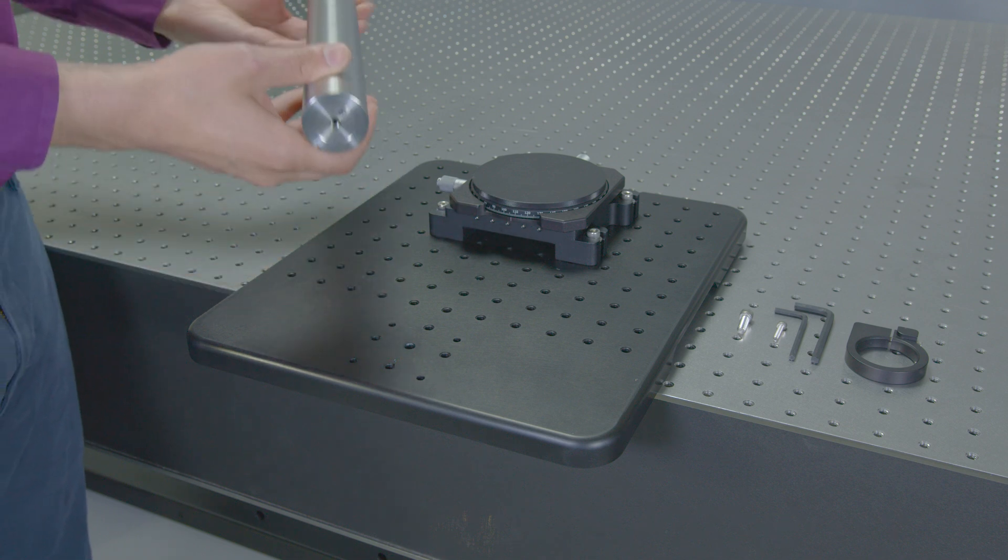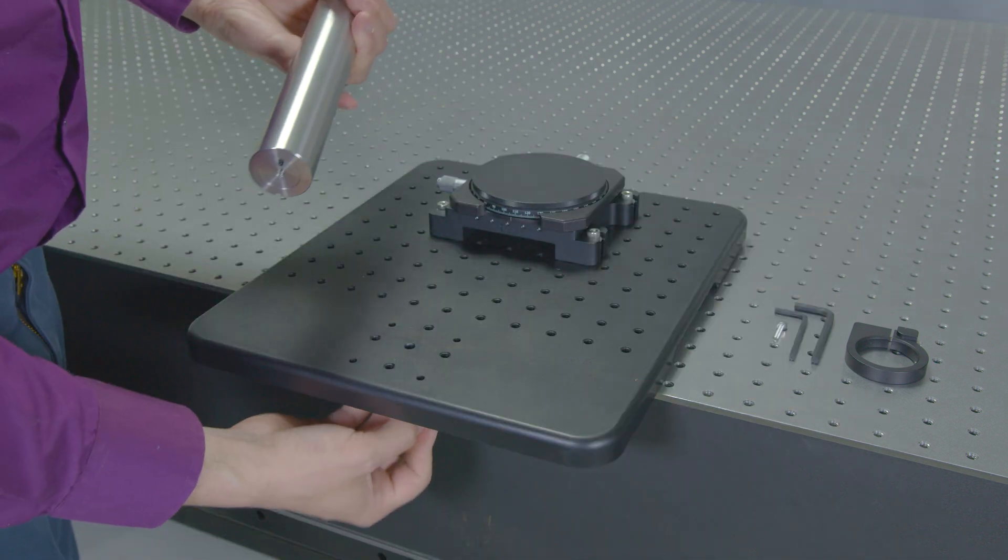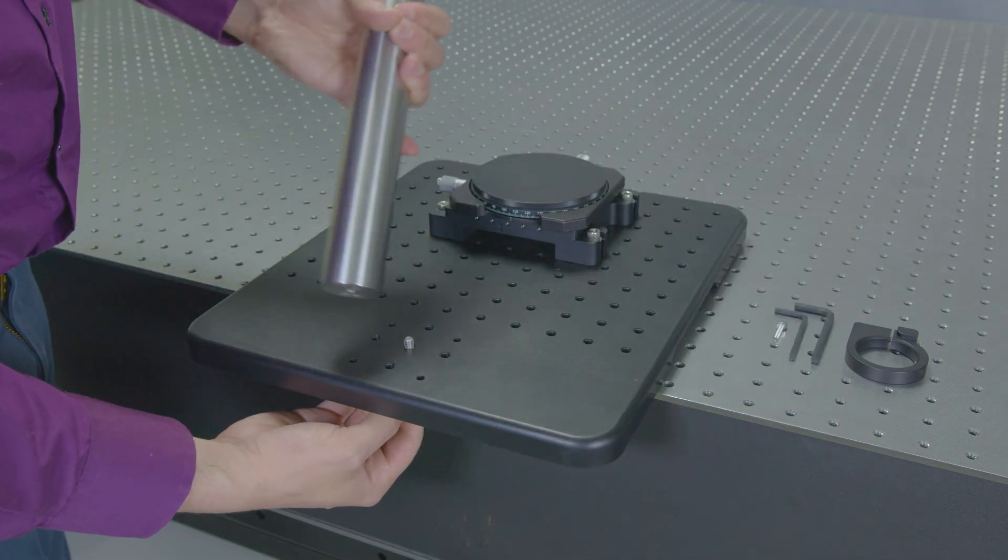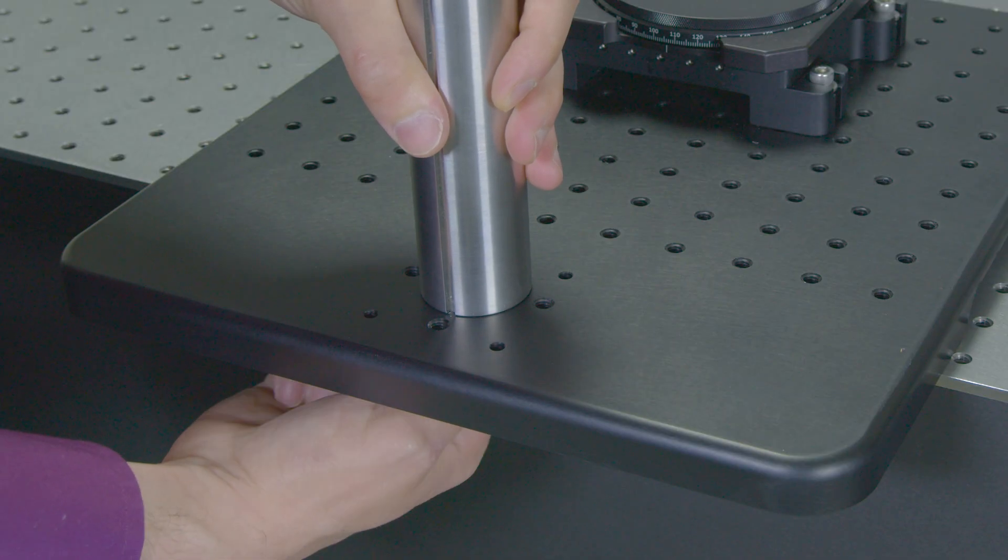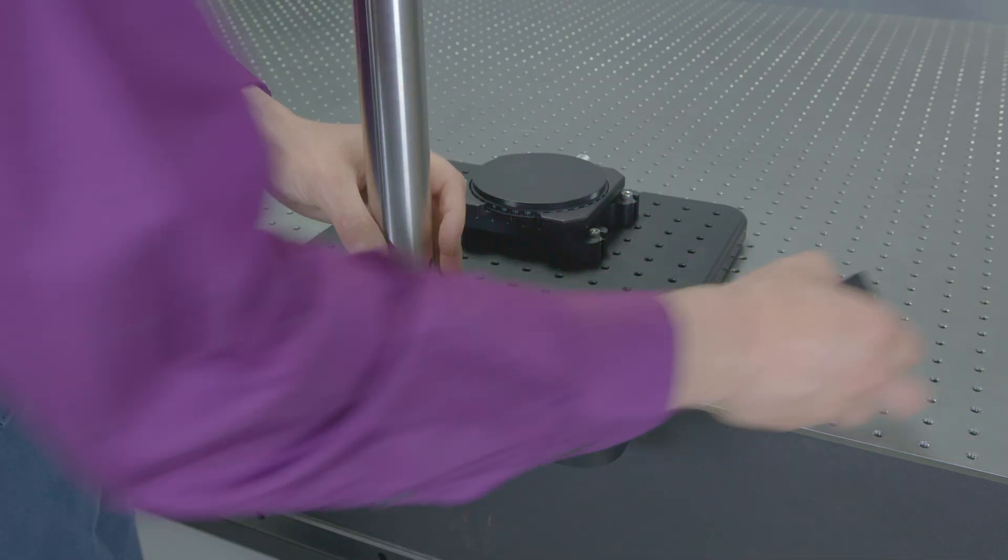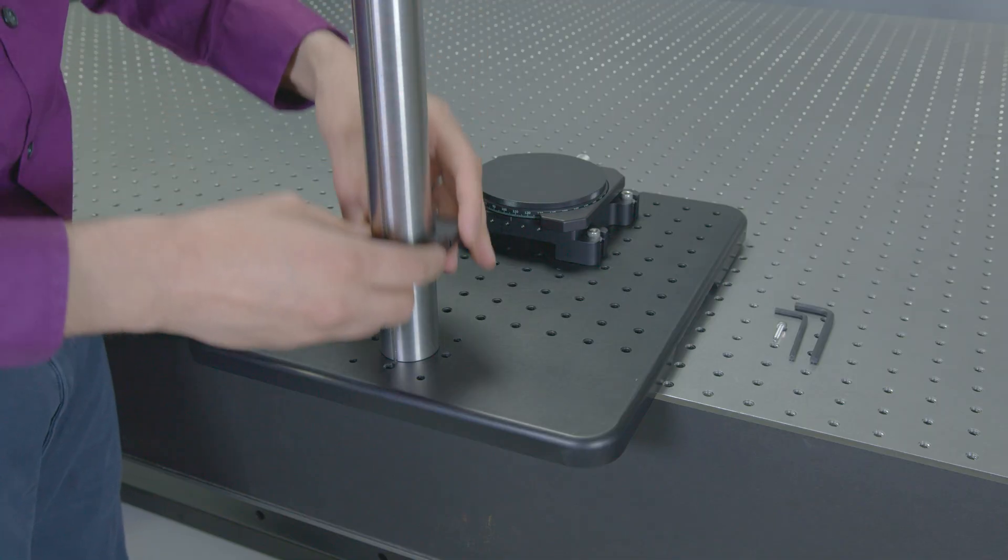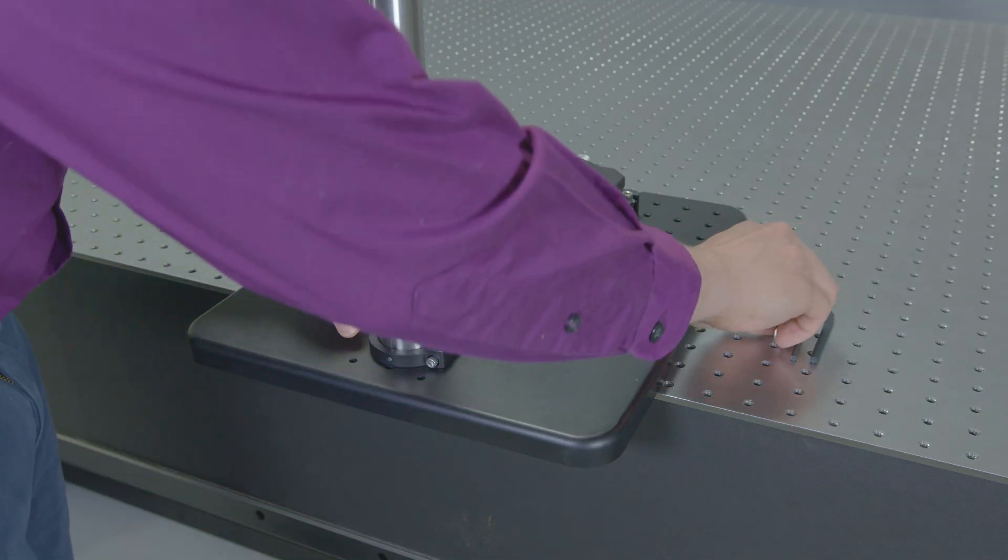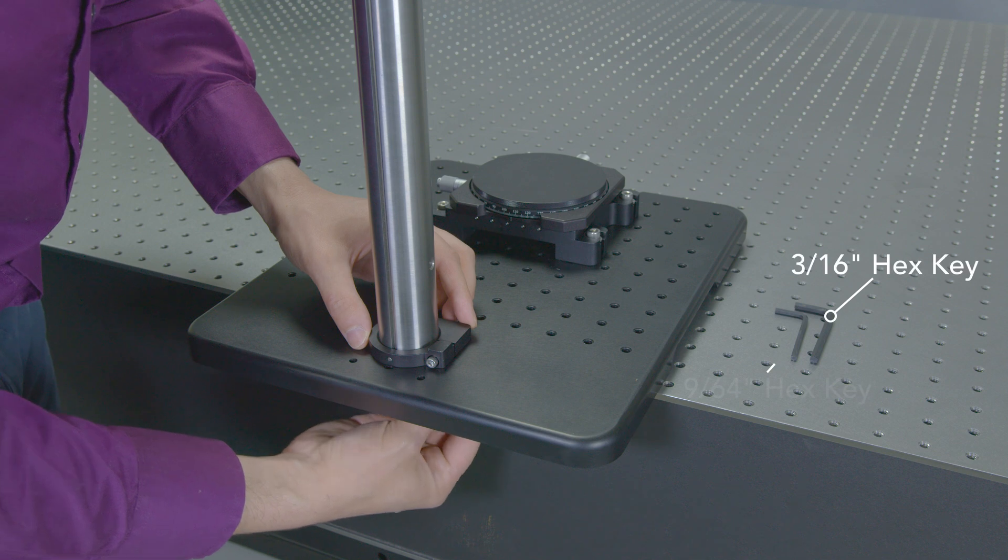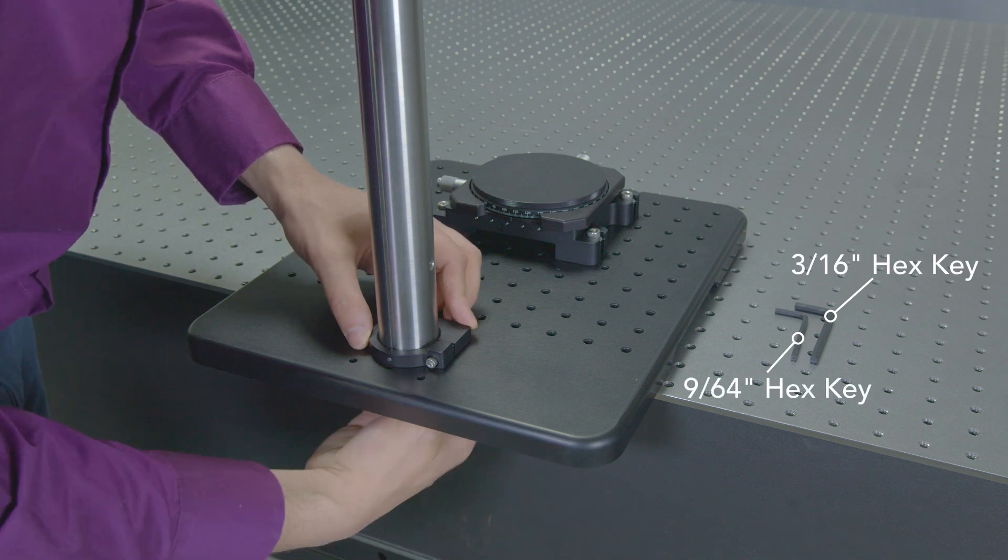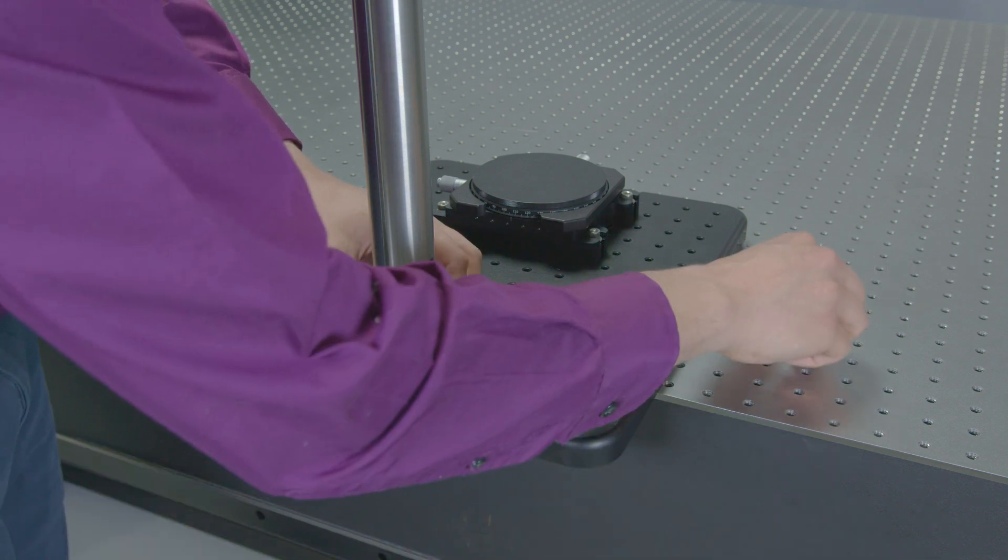Slide the breadboard slightly off the edge of your table. Thread the screw through the breadboard and into the bottom of the optical post. Place the adjustable ring onto the optical post with the alignment pin at the back of the post. Then thread a second screw through the bottom of the base into the ring. Use the included hex keys to tighten each screw.